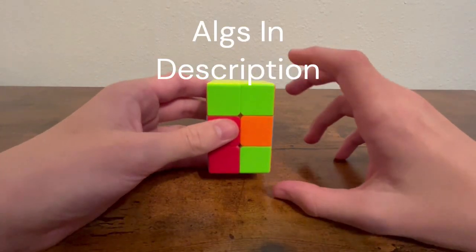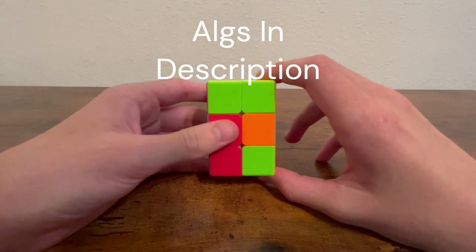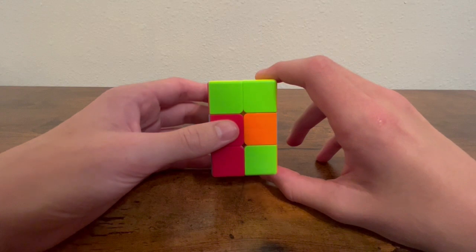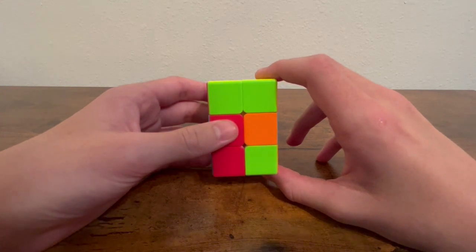So in this last step of the advanced method, you would just do one algorithm to solve the rest of the cube. It is a lot of algorithms, but if you want to get fast at this, this is pretty much the only way.